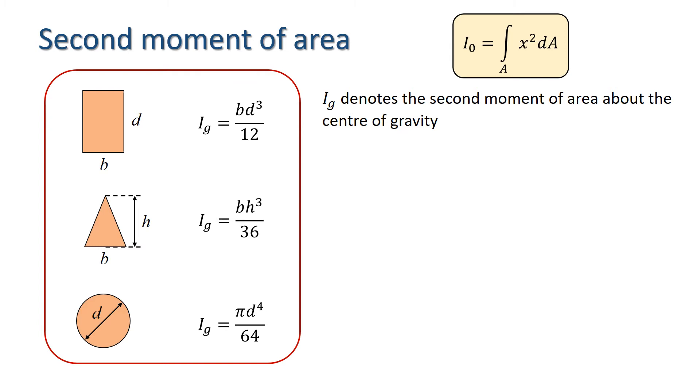Second moments of area about the centre of gravity are given here for a rectangle, triangle and circle as examples. It's also useful to know the parallel axis rule given here, which again I won't go into any further as it is a standard mathematical result.